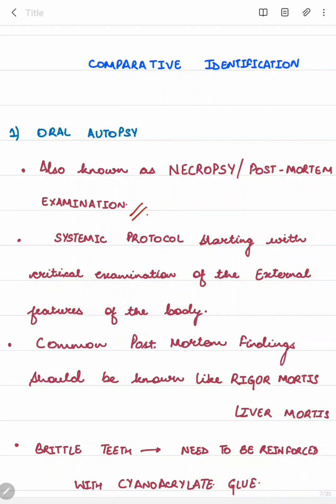The systematic protocol begins with critical examination of the external features of the body. Common post-mortem findings such as rigor mortis and livor mortis should be known. Rigor mortis is important because it may cause the jaws to be very rigid, requiring the use of mouth gags, trisma screws, or intraoral myotomy in order to separate the jaws. The forensic odontologist should be aware of these conditions.